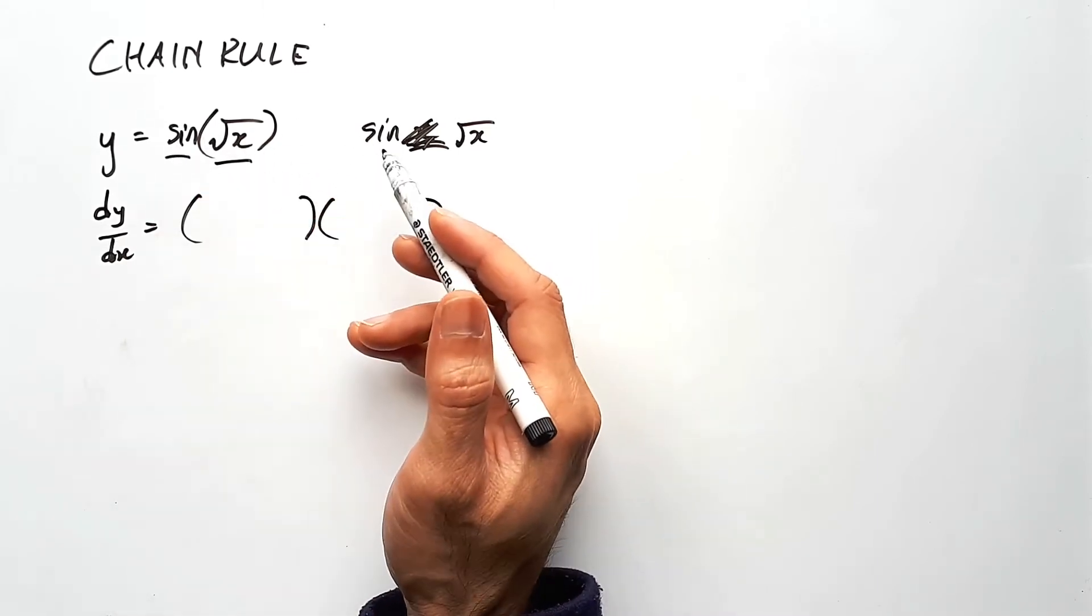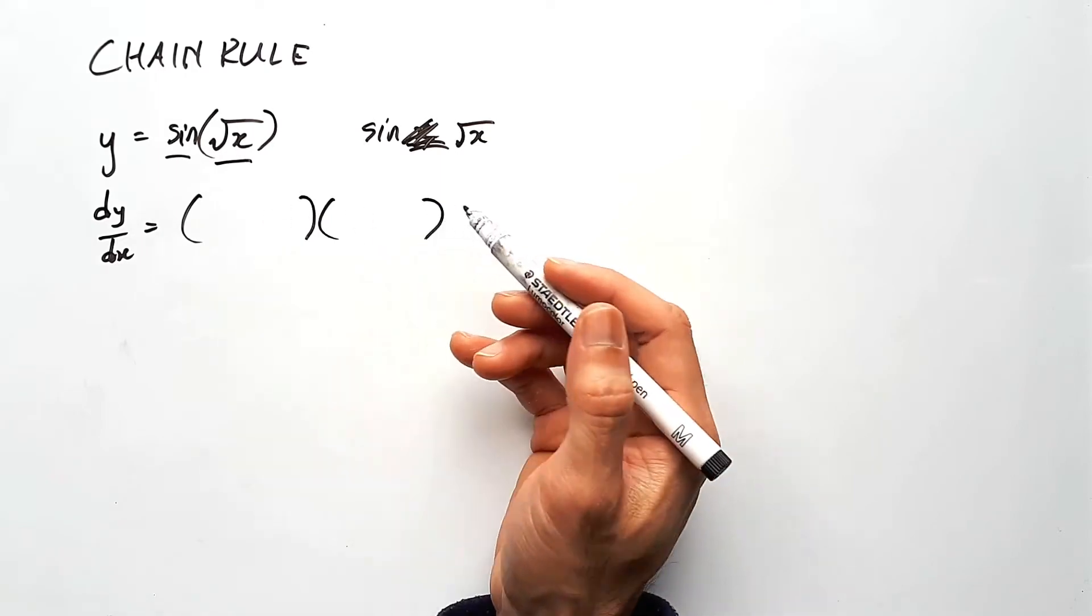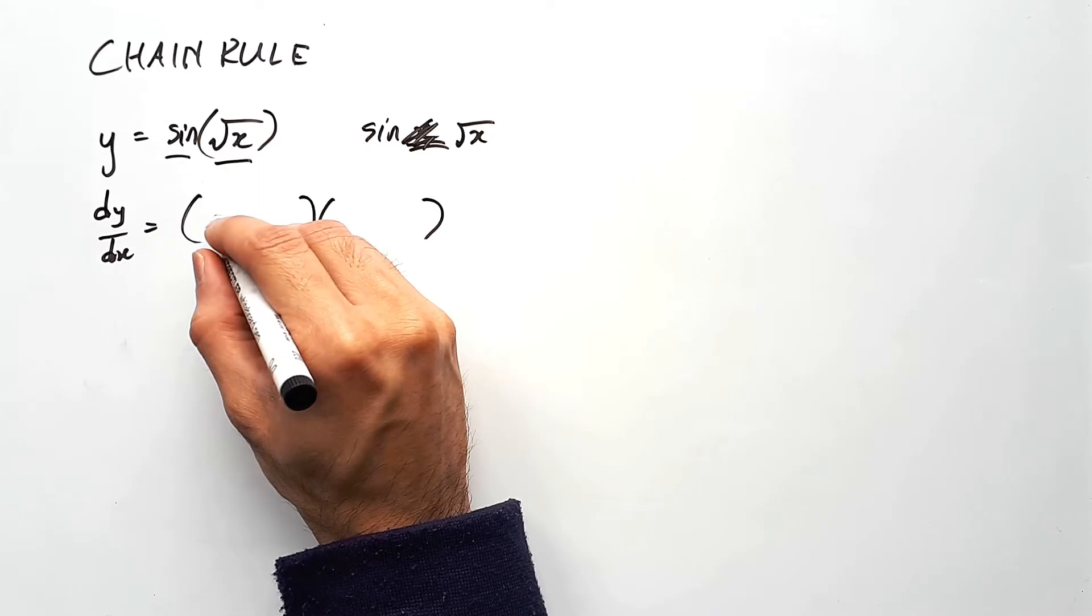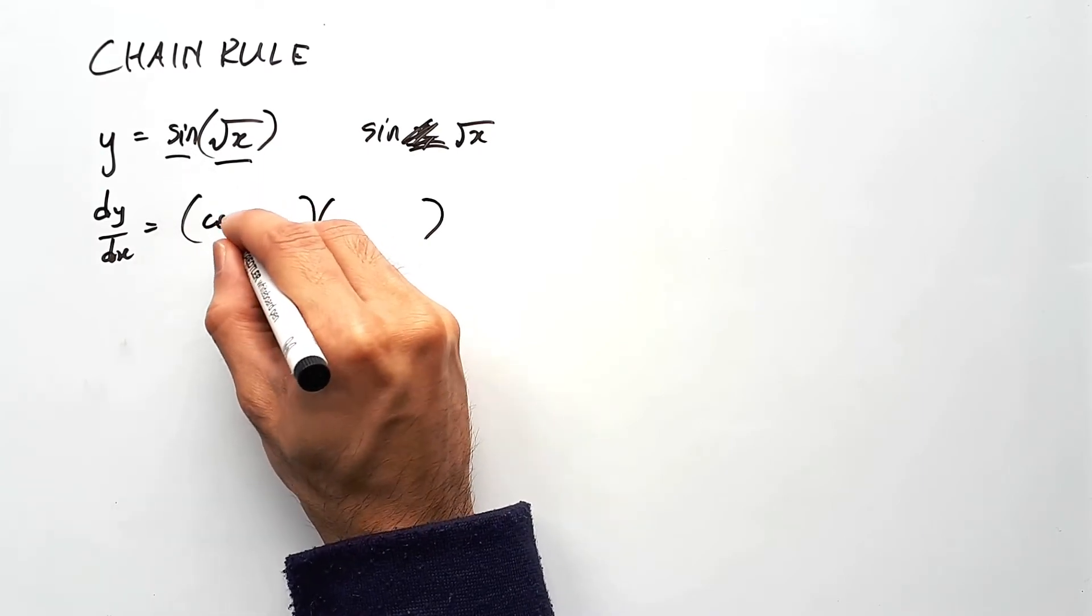Since there are only two functions here, you only set up two brackets. If there were three functions, then you set up three. So the outer derivative of sine would be cos.